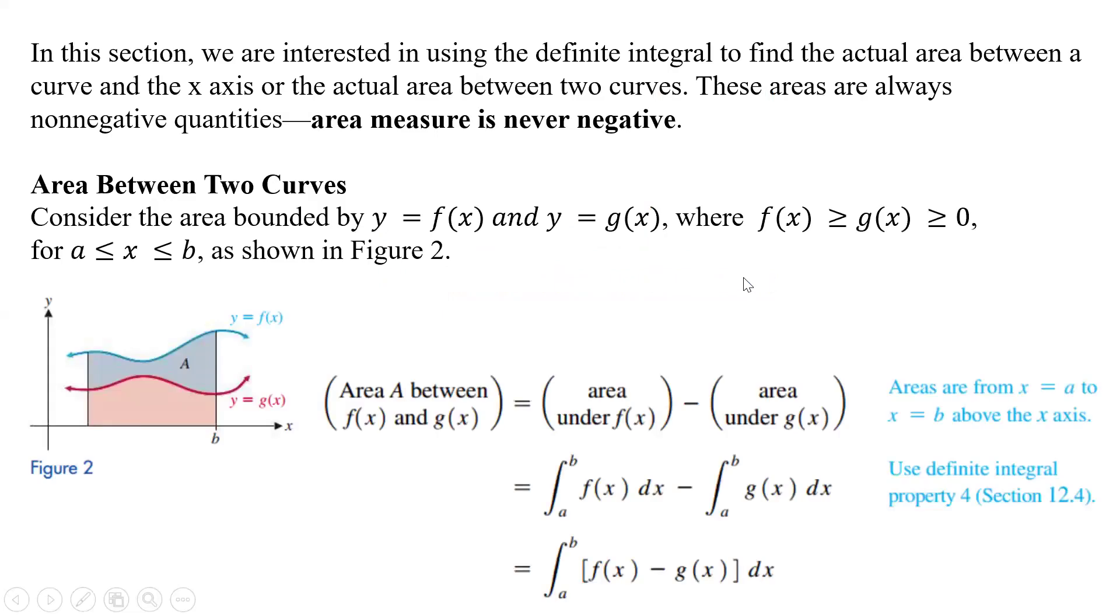In this section, we're interested in using the definite integral to find the actual area between a curve and the x-axis, or the actual area between two curves. These areas are always non-negative quantities because area measurement is never negative.